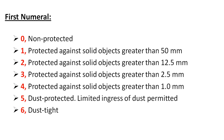If the first numeral is zero, it indicates non-protected — it cannot give any protection against solid objects. If it is one, it is protected against solid objects greater than 50 mm, so a hand or operator's hand falls under this category. Two means protected against solid objects greater than 12.5 mm, so operator fingers fall under this category. Three means protected against solid objects greater than 2.5 mm, so screwdrivers and other maintenance tools fall under this category. Four means protected against solid objects greater than 1 mm; cable wires fall under this category.